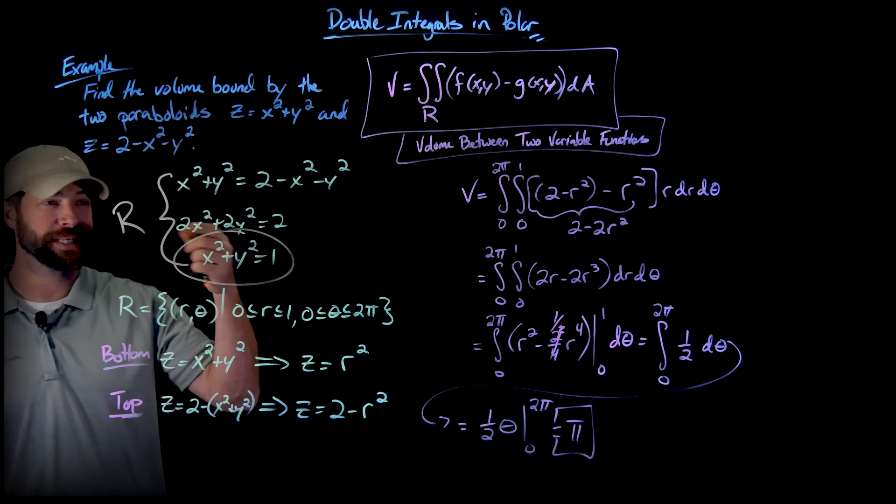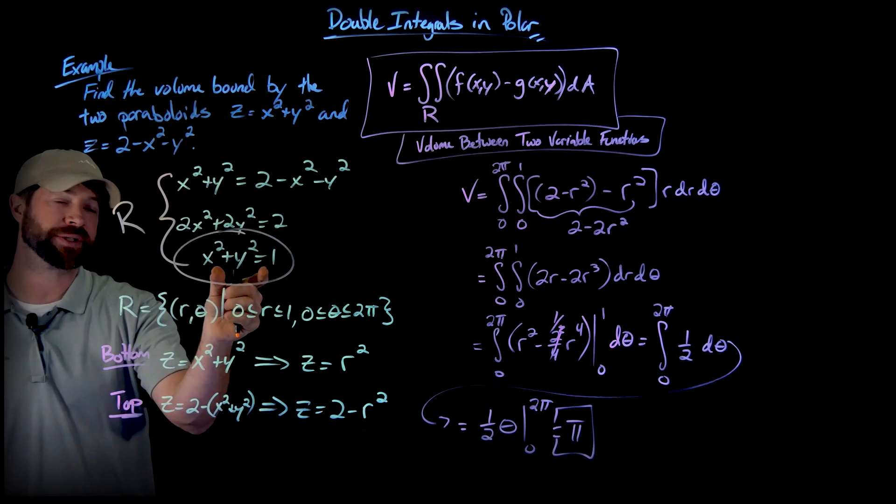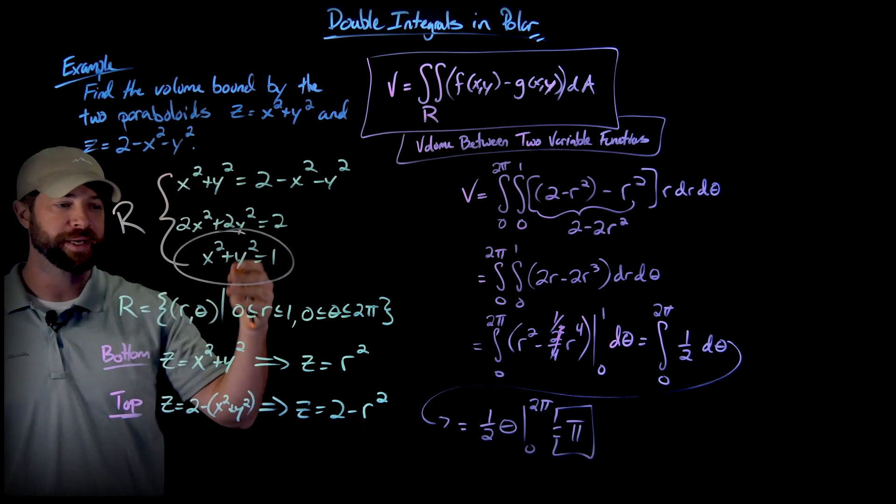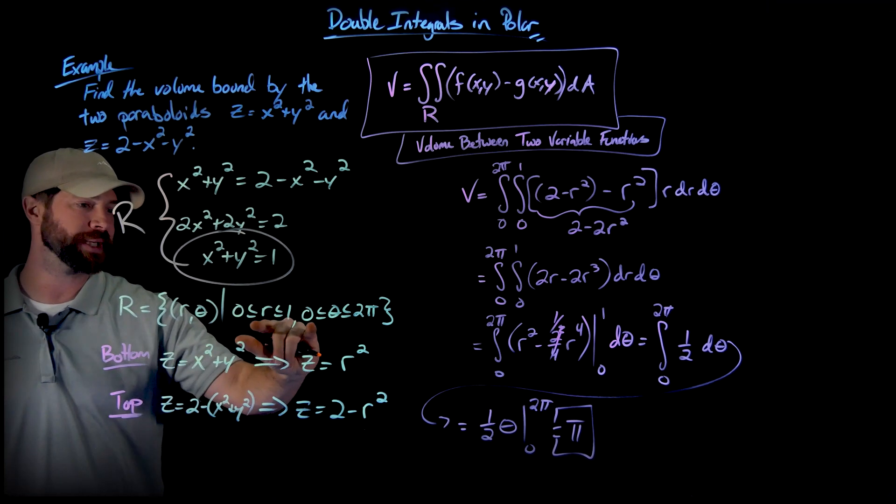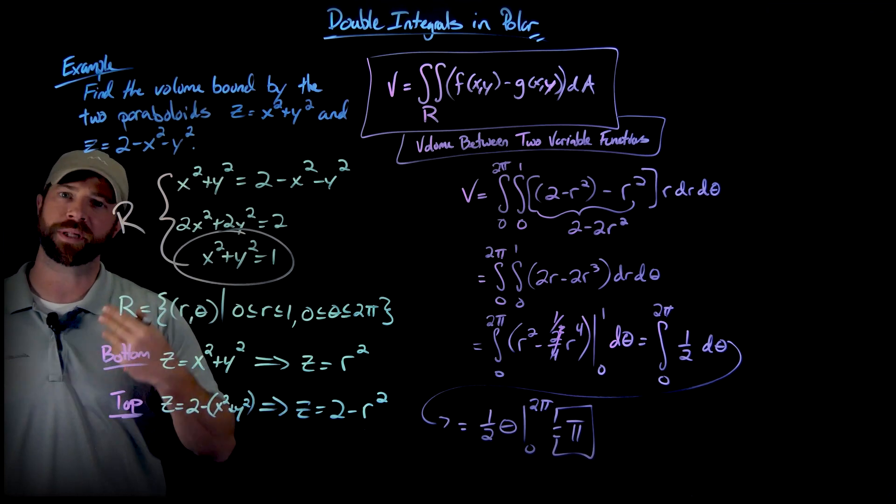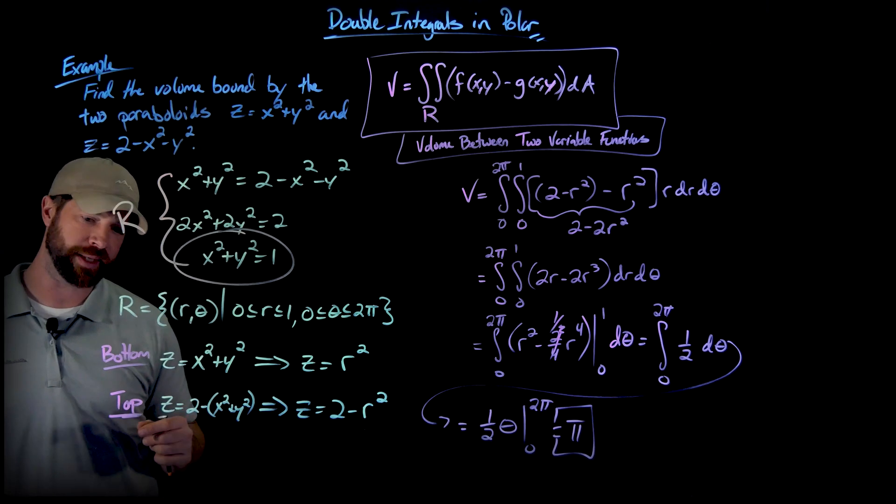Your region, in this case, was the intersection between these two, which is this circle of radius 1. That made it really easy to write this region in polar coordinates. Again, it would have been a lot more work if we had to do that in rectangular.